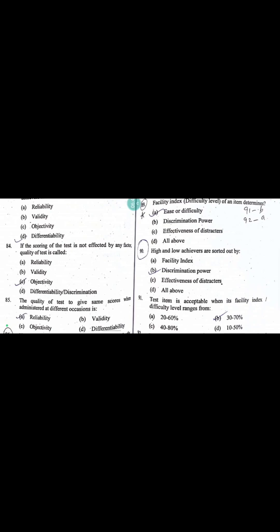The quality of a test that measures what it claims to measure is called validity. The characteristic of a test that distinguishes between high achievers and low achievers is discrimination ability. If the scoring of a test is not affected by any factor, the quality is called objectivity. The quality of a test to give the same score when administered at different occasions is reliability. Reliability is the key point where you get the same score.